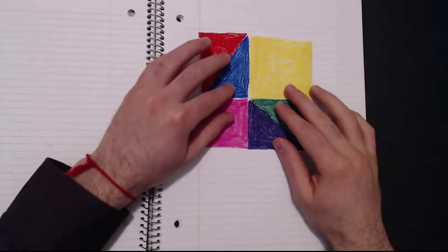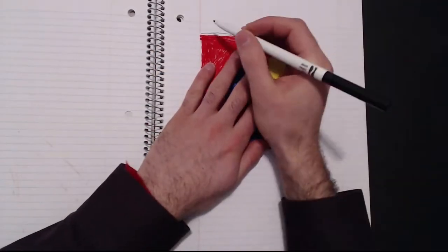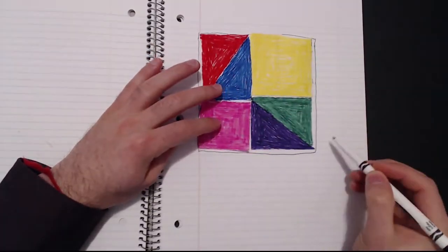All these shapes together form an even larger square that can be drawn all around. Let's make this large square hold all the shapes inside of it.